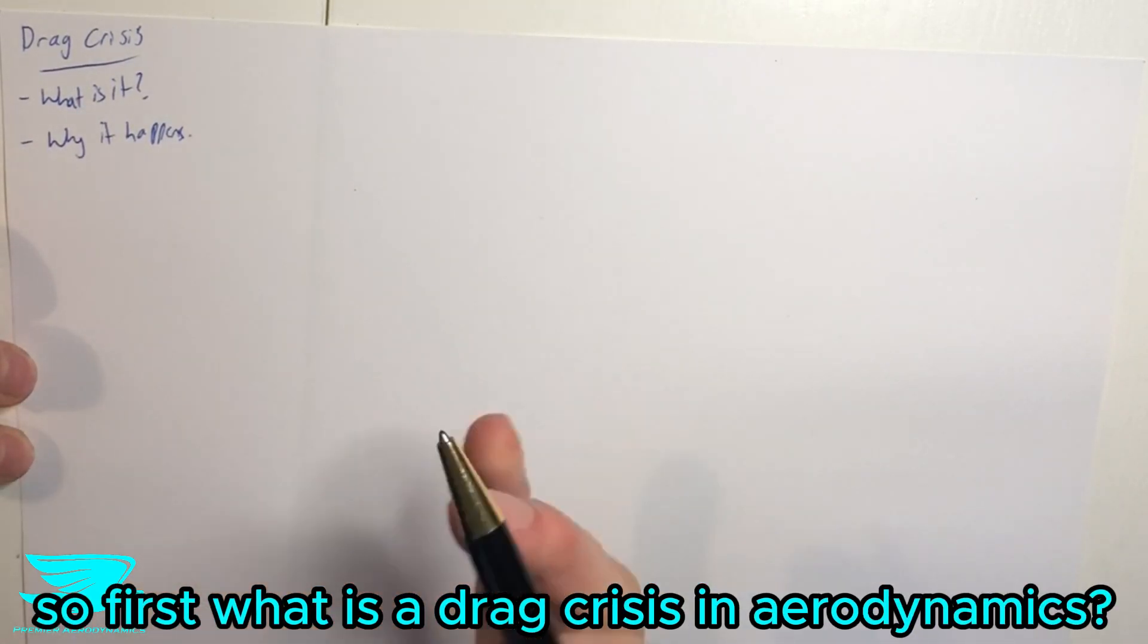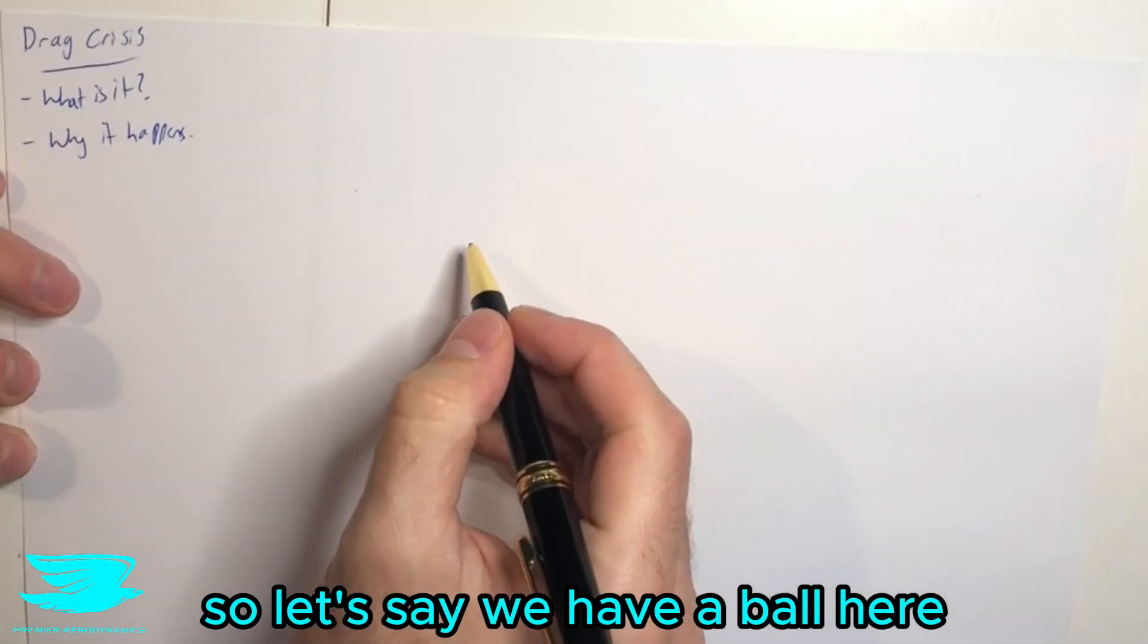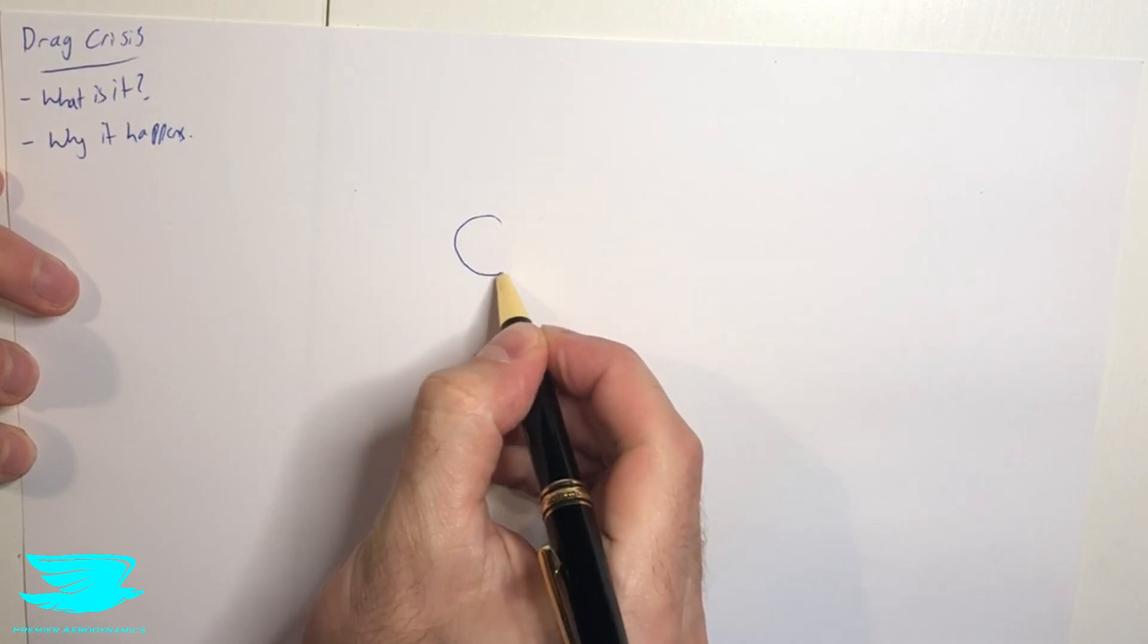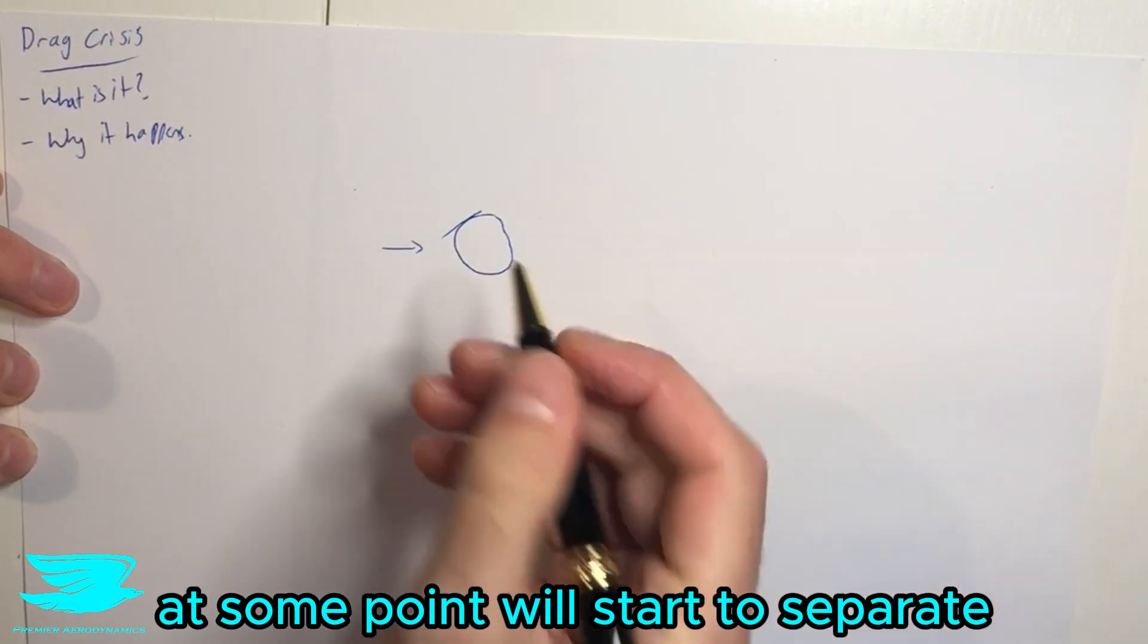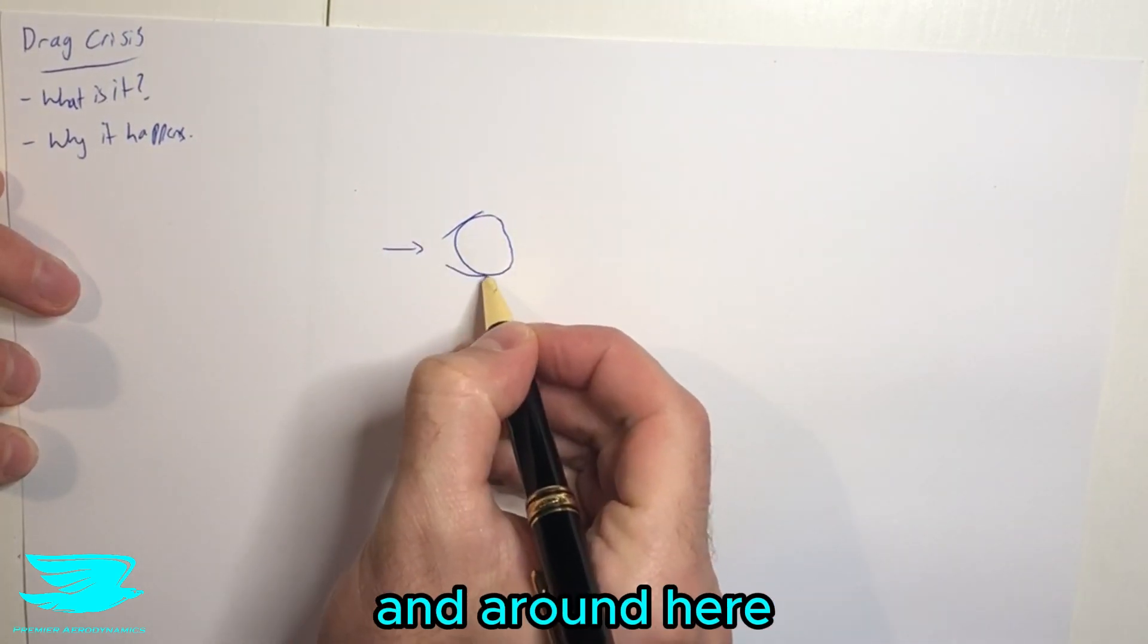So first of all, what is a drag crisis in aerodynamics? Let's say we have a ball here and the flow is going over it. And we know that the flow at some point will start to separate. And let's say it separates here and around here.